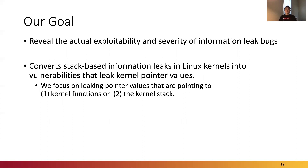In this work, we demonstrate the actual exploitability and severity of information leak bugs in Linux kernels by proposing a generic and automated approach that converts stack-based information leaks into vulnerabilities that leak kernel pointer values. These vulnerabilities are easier to exploit and are more severe than what is generally believed. Specifically, we focus on leaking pointer values pointing to kernel functions or the kernel stack, which can be used to bypass kernel defenses such as KASLR — an essential step in modern Linux kernel exploits.